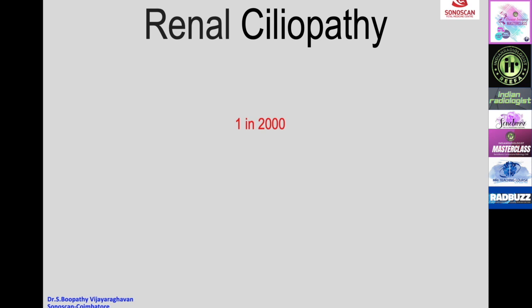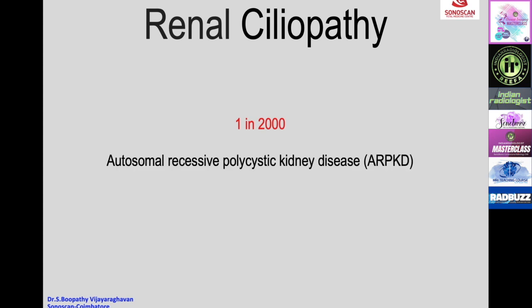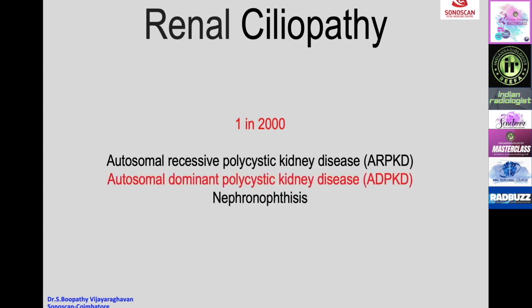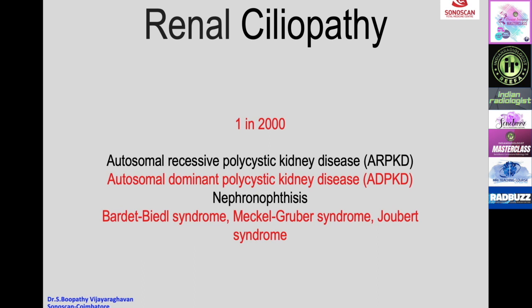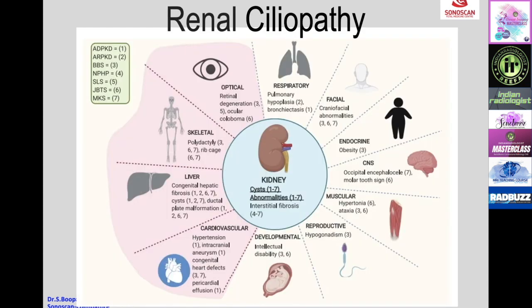There is also dysregulated ciliary-dependent signaling, resulting in kidney failure requiring dialysis and transplantation over time. The incidence of renal ciliopathy is 1 in 2000. Diseases of renal ciliopathy include autosomal recessive polycystic kidney disease, autosomal dominant polycystic kidney disease, nephronophthisis, and syndromes like Bardet-Biedl syndrome, Meckel-Gruber syndrome, and Joubert syndrome. Renal ciliopathy involves cystic or parenchymal abnormality of the kidney with various associated anomalies of other organ systems.